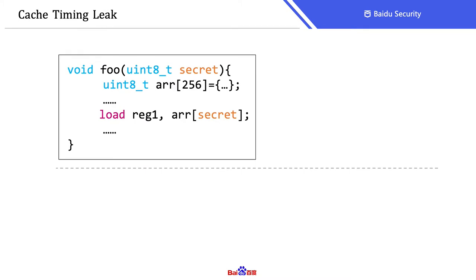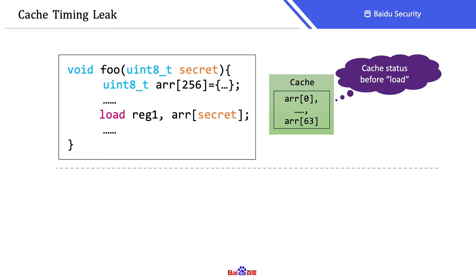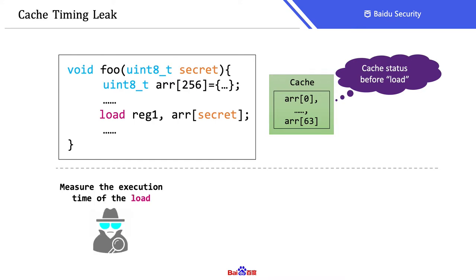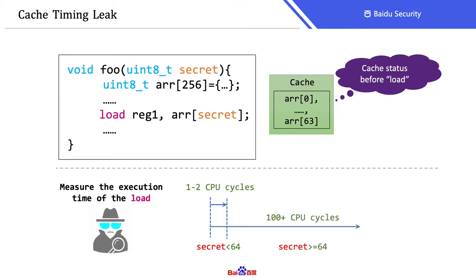For example, function fo takes a secret as the input. Assume that before executing the load instruction, the first 64 bytes of an array are already in cache. Then the external adversary can measure the execution time of the load instruction. If it is very fast, like a typical cache hit, then secret must be less than 64. If it uses much more time, then secret should be greater than 63 due to a cache miss. So the value range of the secret is leaked by the cache timing.